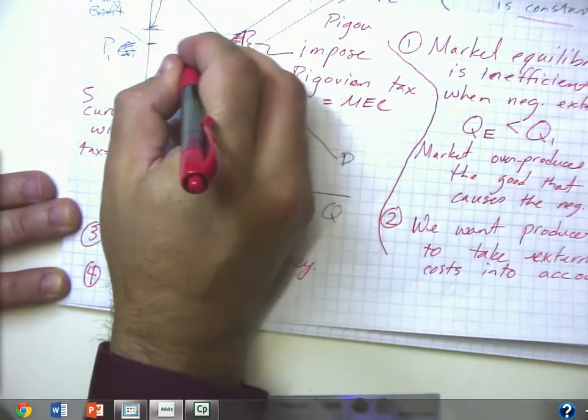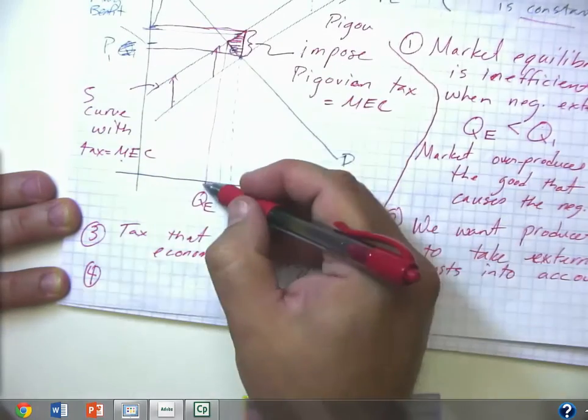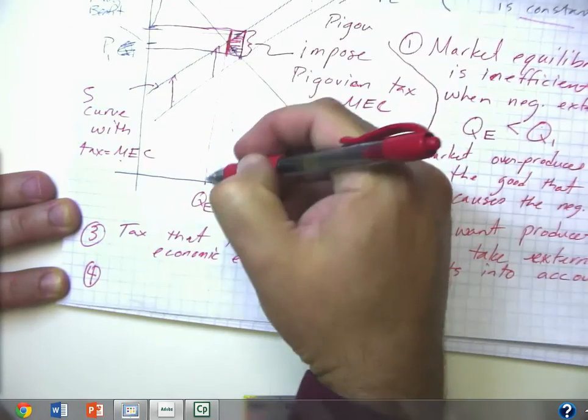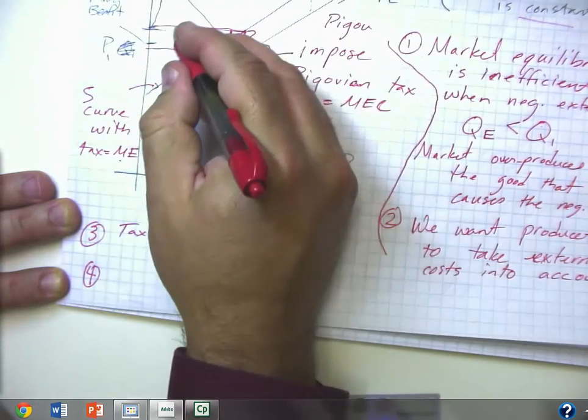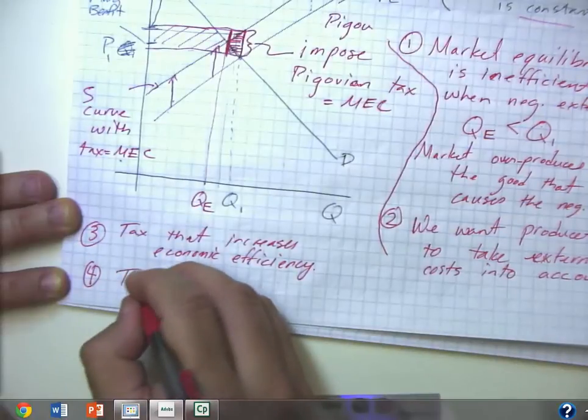The other thing is, of course, we're going to get some tax revenue. Just like before, our tax revenue is going to be the amount of the transaction in the equilibrium times the amount of the tax. So we get some tax revenue.